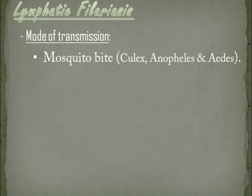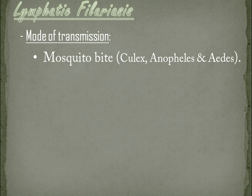Mode of transmission — mosquito bite. It is transmitted by various types of mosquitoes. Culex mosquitoes are widespread across urban and semi-urban areas; Anopheles are mainly found in rural areas, while Aedes are mainly in endemic islands in the Pacific. Mosquitoes are infected with microfilariae by ingesting blood while biting an infected host. Microfilariae will mature into infective larvae within the mosquito, and when the infected mosquito bites a person, the larvae are deposited on the skin and enter the body. They travel to the lymphatic vessels, where they develop into adult worms.